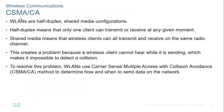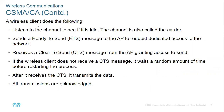Wireless uses CSMA/CA. Before a wireless device sends something, it must ensure no other device is sending, otherwise we get a collision. Wireless devices use the RTS/CTS mechanism — they send a 'ready to send' message, and only when they receive a 'clear to send' message does the mobile phone or laptop transmit over the air.